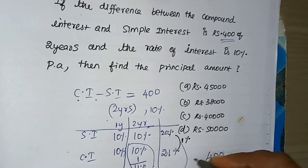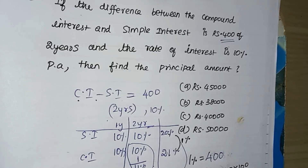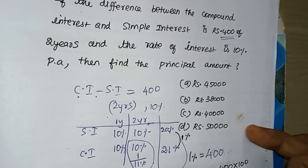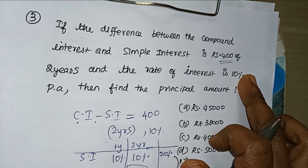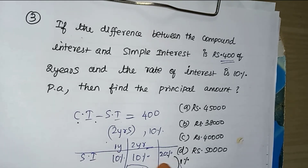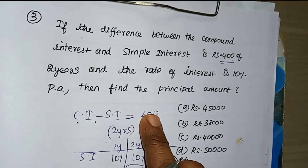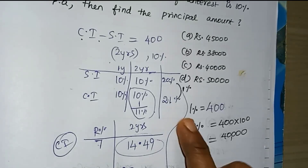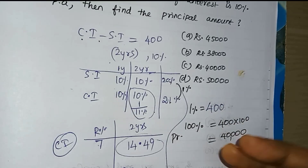If you get the difference of 1% equal to Rs. 400, then the principal amount can be found. If 1% equals 400, then you multiply to get 100%, which gives the principal. So the answer for the principal amount is 40,000.